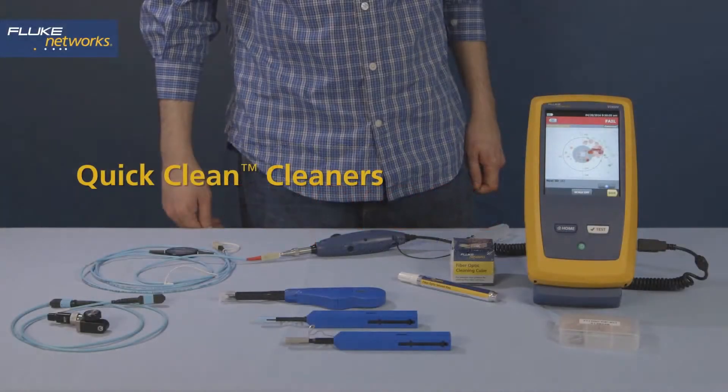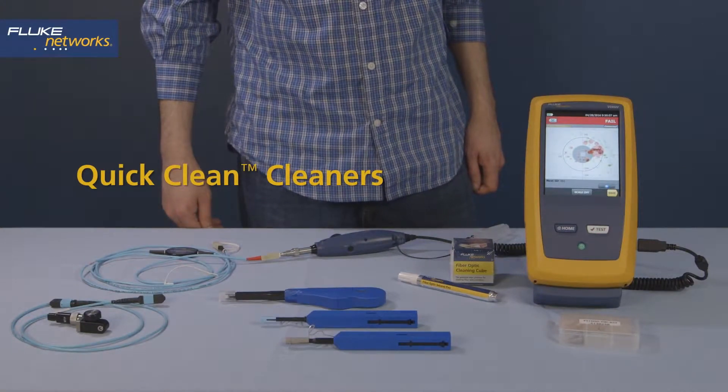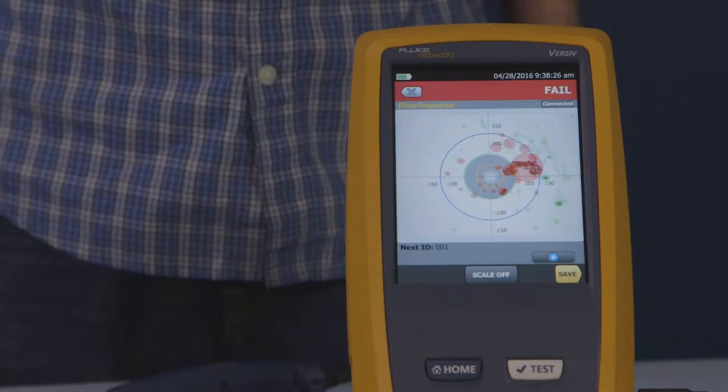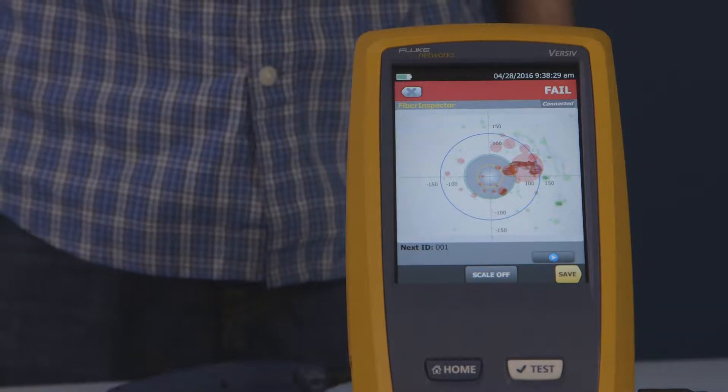Cleaning and inspection are the most important parts of fiber communication. If you can't see or clean your end faces, you're literally driving blind.